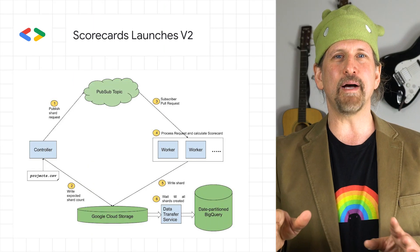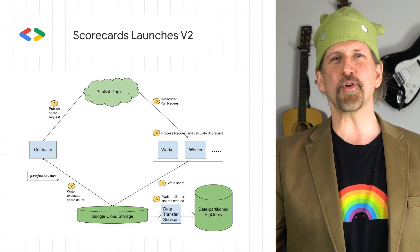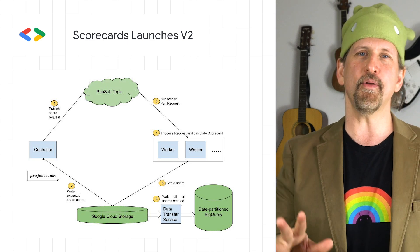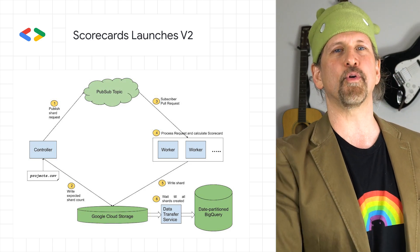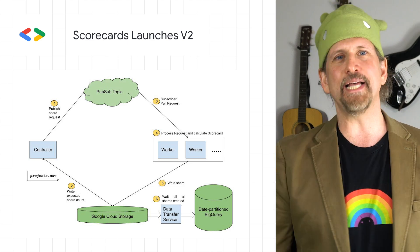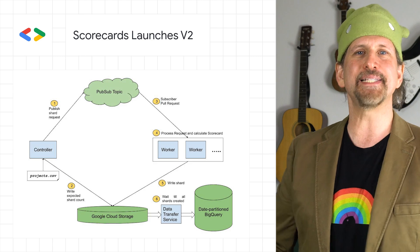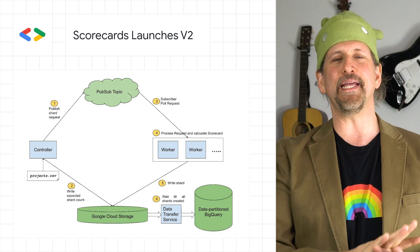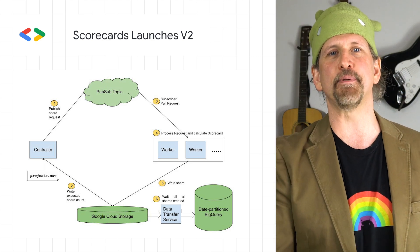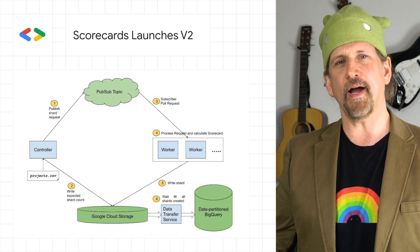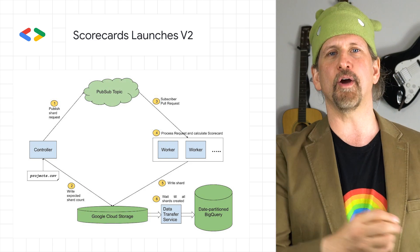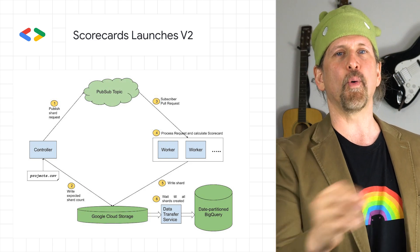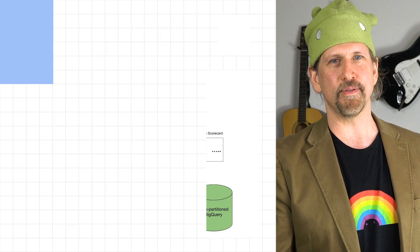We announced Scorecards v2, a major update to our automated security tool that produces a risk score for open source projects. It adds new security checks, scales up the number of projects being scored, and makes this data easily accessible for analysis. Learn more about the kinds of issues Scorecards v2 can detect and how to improve the score of your open source library on the post.